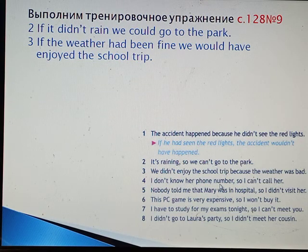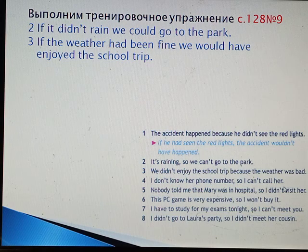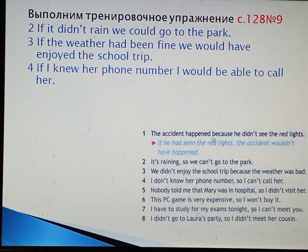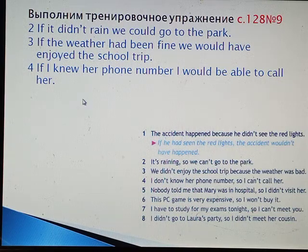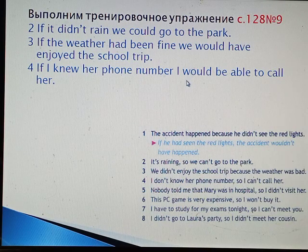I don't know her phone number, so I can't call her. Я не знаю её номера телефона и не могу ей позвонить. А если бы знал — мог бы. Это воображаемая ситуация, относящаяся к настоящему времени. Мы работаем во втором условном. If I knew her phone number, I would be able to call her. Можно построить по-другому: If I knew her phone number, I could call her.